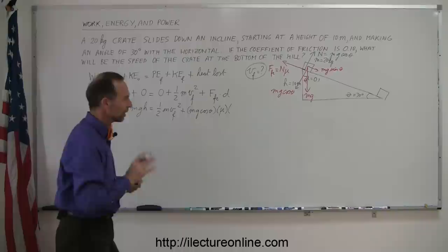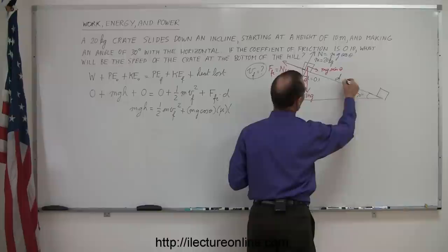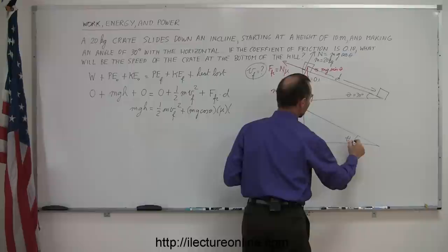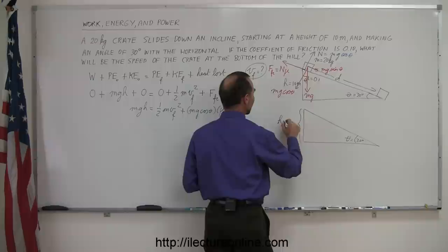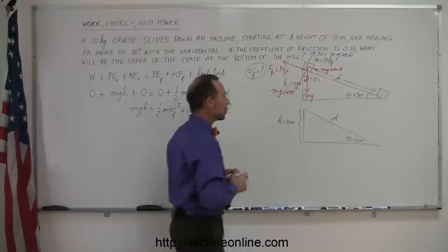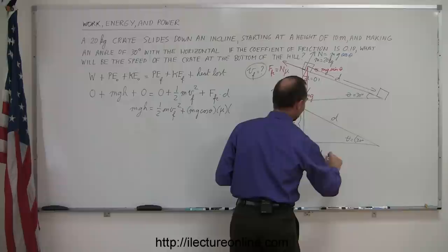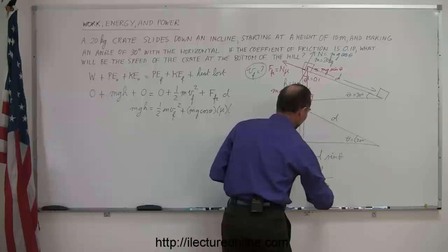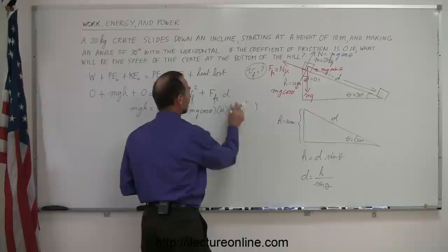Before plugging in the distance, let's figure out what the distance is. Using trigonometry on the triangle formed by the incline — with angle theta of 30 degrees, opposite side h equal to 10 meters, and hypotenuse d — we know that h equals d times sine of theta. Therefore d is equal to h divided by the sine of theta, and so instead of d in our equation, we write h divided by sine of theta.